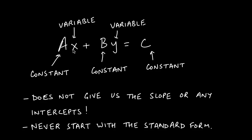In standard form, the variables are X and Y, and A, B, and C are constants. What's important to observe here is that both variables are on the same side of the equation and the free-floating constant is by itself. The downside of this form is that it does not give us any information on the slope or any of the intercepts — the coefficient of X is not the slope of the line.